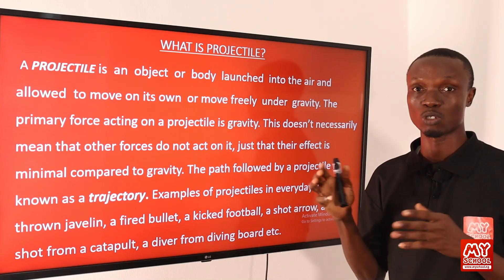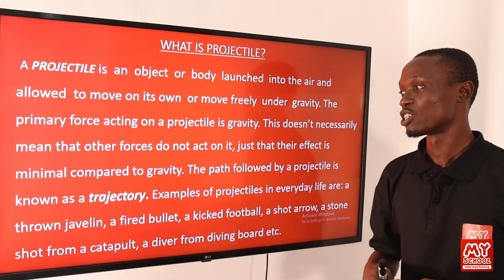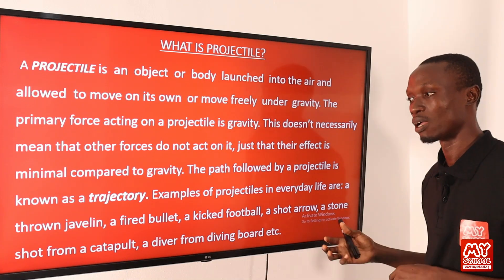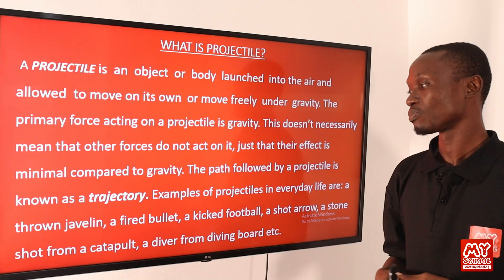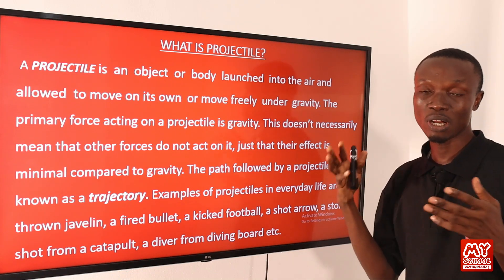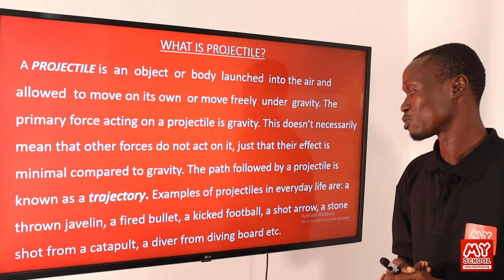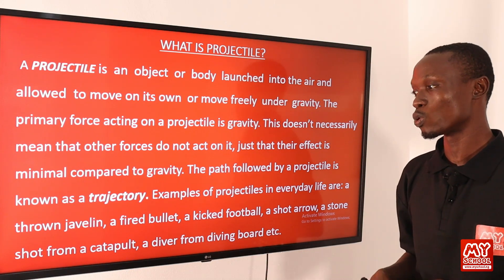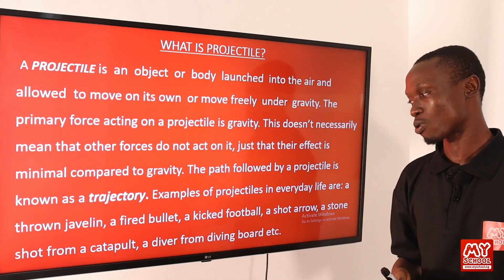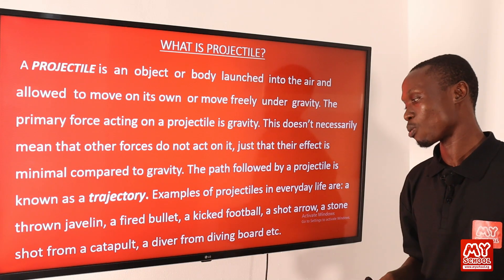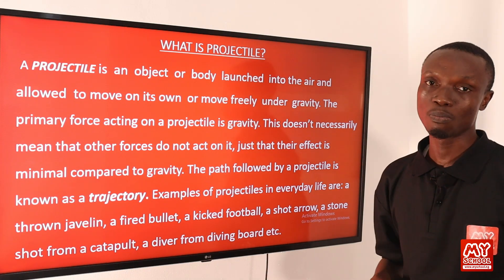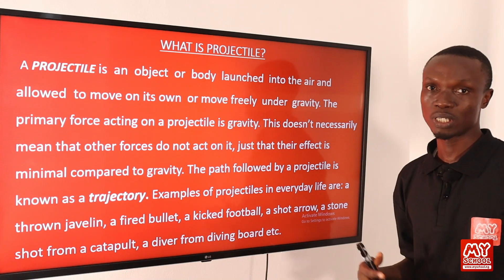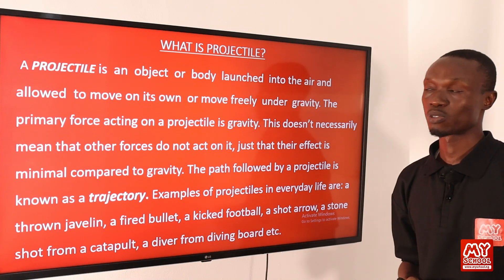Examples of projectile in everyday life include: a thrown javelin, a bullet fired from a gun, a kicked ball, a shot arrow, a stone shot from a catapult, and a diver from a diving board — these are all examples of projectile in everyday life.